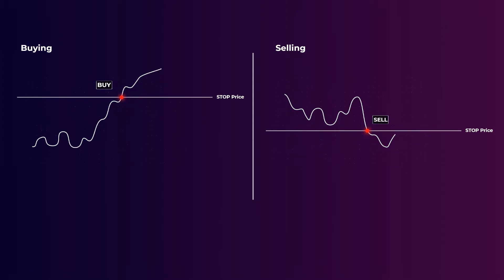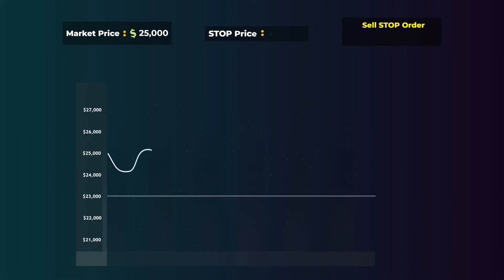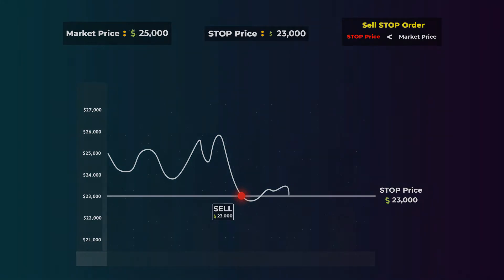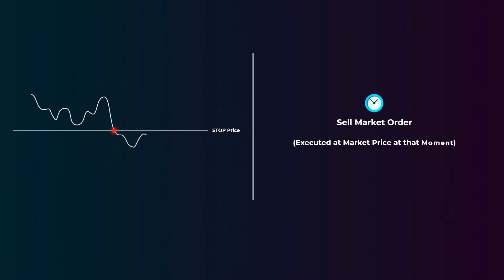Let's see a sell stop order example. If the market price is $25,000 and you want to limit your losses when bitcoin starts to decline in price, you place a sell stop order and set the stop price at $23,000. That means you want to sell your bitcoins once the price reaches $23,000 to avoid more losses. You can set the stop price lower than the market price, and your order will be activated once the price reaches $23,000. When that happens, your bitcoin will be sold at the market price, which may equal $23,000 or close to it. So the sell stop order, once activated, basically turns into a market sell order and sells your bitcoin immediately at whatever the market price is at that moment.